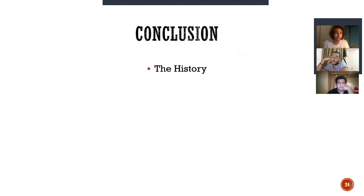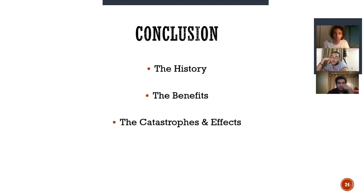To conclude, we've talked about the history of nuclear weapons and how nuclear material was discovered. We talked about the benefits — anything has its pros and cons, and there are definitely benefits to nuclear material. We talked about the catastrophes and their immediate and long-term effects to showcase that yes, there are benefits, but they are nowhere near close to outweighing the devastating damage that nuclear materials and nuclear weapons cause. Some of these catastrophes still have long-term effects on people in those areas to this day.